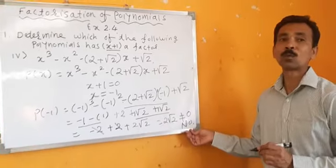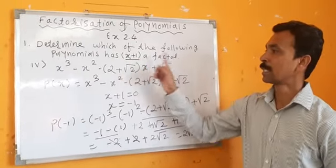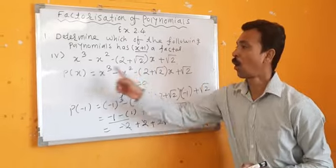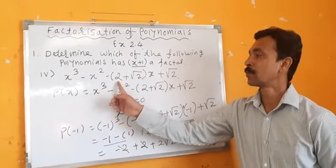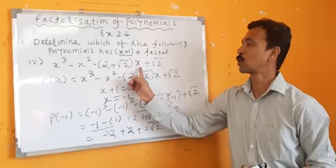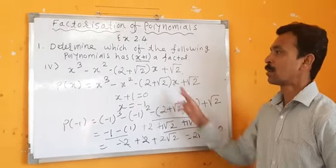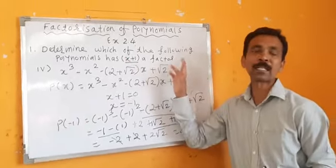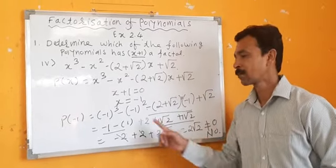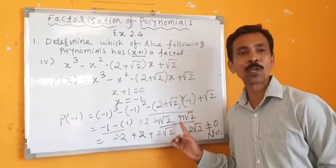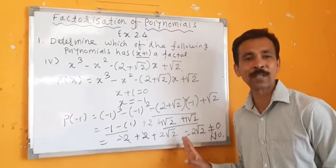So the answer is no. Therefore, x plus 1 is not a factor of x cubed minus x squared minus 2 plus root 2 times x plus root 2. This is the method to check whether x plus 1 is a factor of the given polynomial. Calculations are very important — if the sign or calculation goes wrong, the whole sum gets wrong.